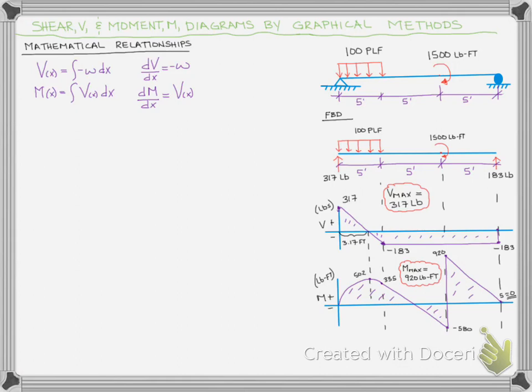Concisely, if we want to know the shear at any point X, we can just integrate the load — or the negative of the load — where omega or W, both terms are used, represents the load. Conversely, the derivative of the shear is then just equal to the negative of the load.